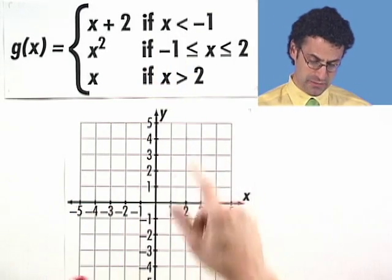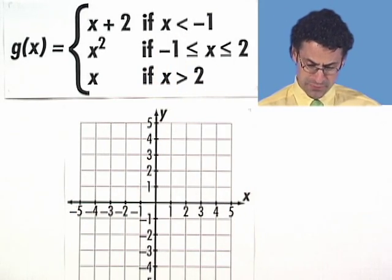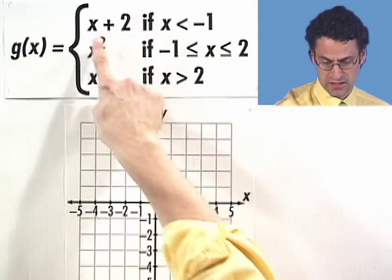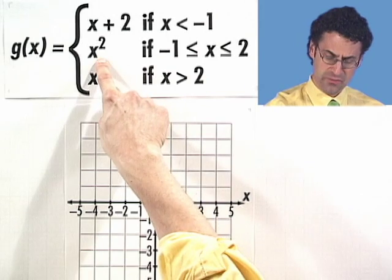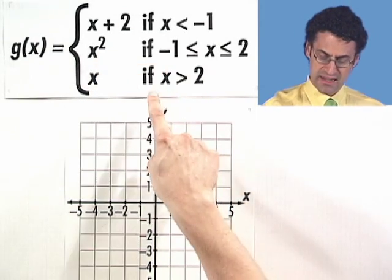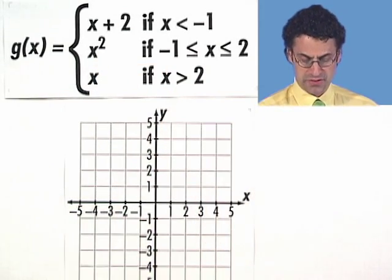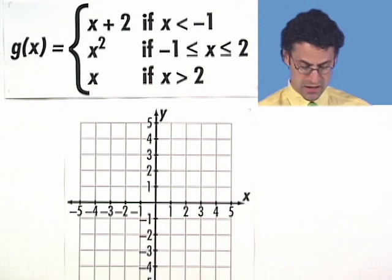If x is going to be strictly less than negative 1, then we look like this, which is just a line. If you're between negative 1 and 2, including the endpoints, then we're part of this little parabola. And if we're actually greater than 2, then we're part of this line.